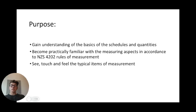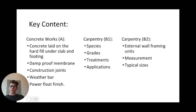This report allows members of Group B to see, touch and feel the typical items of measurement gathered by construction contractors. The aspects we will be exploring are concrete works and carpentry, with carpentry split into two sections: treatment and the external framing units. For concrete works we'll cover concrete laid on the hard floor, under slab and footings, damp proof membrane, construction joints, weather bar, and power float finish. Carpentry B1 covers species, grades, treatments and applications. Carpentry B2 covers external wall framing units, measurements and typical sizes.